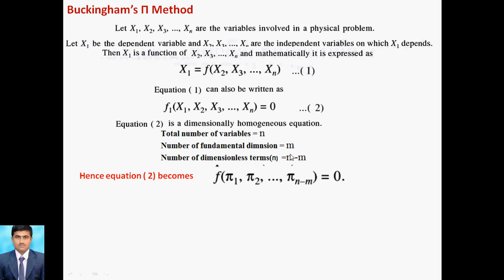Equation 2 becomes: f(π1, π2, ... π(n-m)) = 0. For example, suppose n = 4 and m = 3, then 4 minus 3 = 1, so there is only one pi term and we write f(π1) = 0. Always remember: fundamental dimensions m is equal to 3. So number of variables minus 3 gives the dimensionless terms. If n = 5, then 5 minus 3 = 2, giving π1 and π2 as two dimensionless terms.